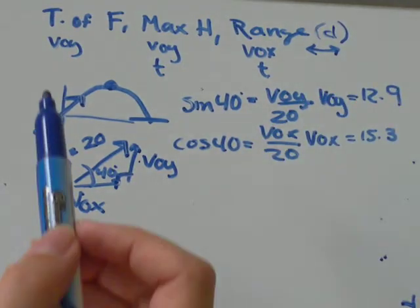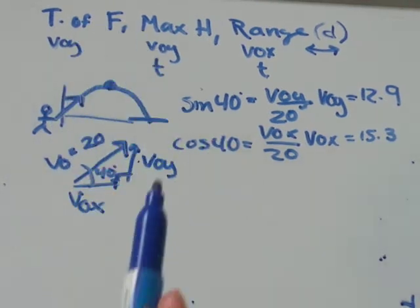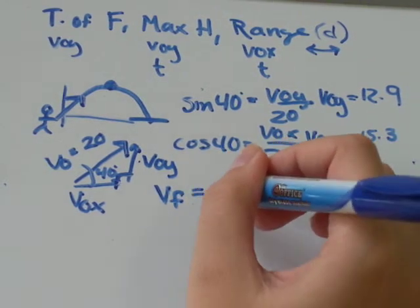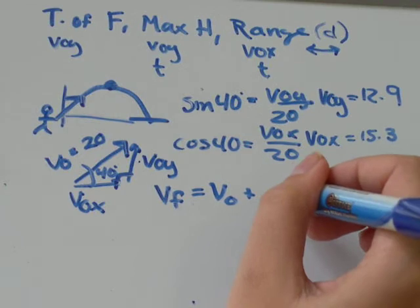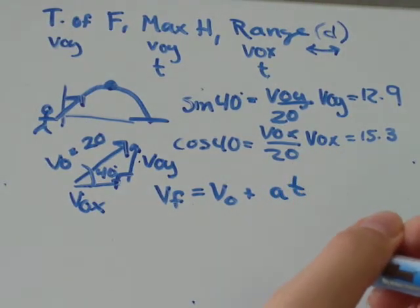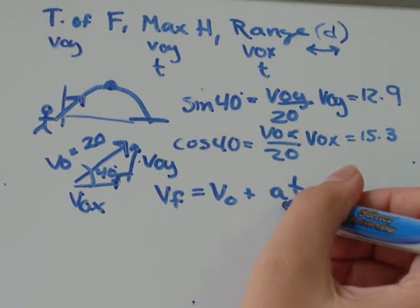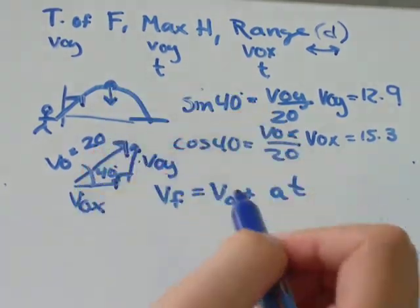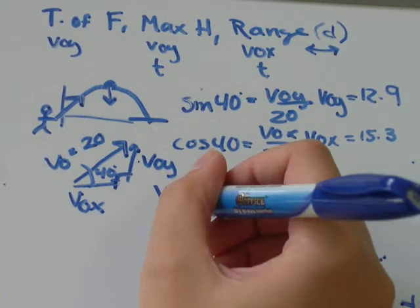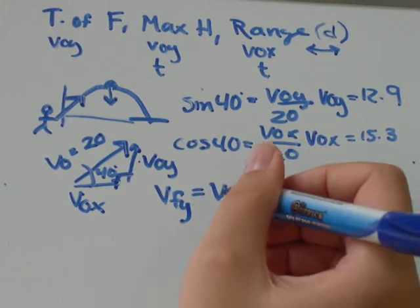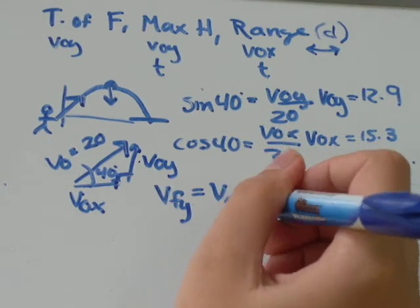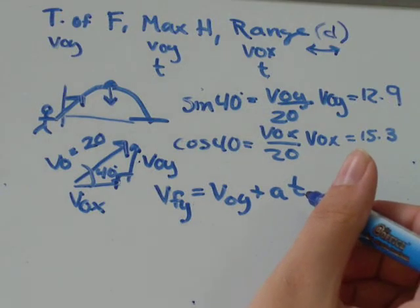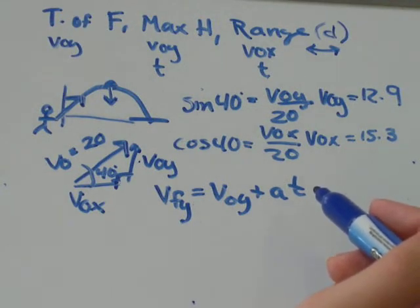We can use that information to solve for time of flight. I'll use the formula Vf equals V0 plus acceleration times time. Now, let's think about the acceleration for a minute. Acceleration, in this case, is coming from gravity, which is in the up and down direction. So, the final velocity we're going to use needs to come from the y direction. The initial velocity we use needs to come from the y direction. Time doesn't have a direction associated with it, so that's why we're able to use it for things in both the x and y direction.